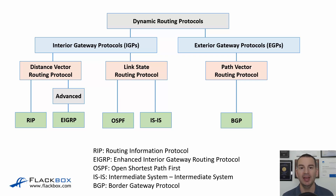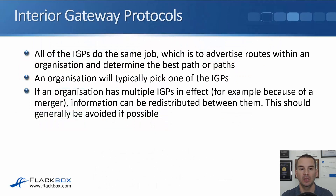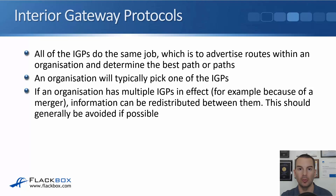So that's our different IGPs. As mentioned, our one and only EGP in use today is BGP, the Border Gateway Protocol. In the next several sections I'll be covering the IGPs in depth, and we'll get to BGP in a later section. With our IGPs, they all do the same job: advertising routes within an organization and determining the best path or paths to the different networks. An organization will typically pick one IGP — they all do the same job, so there isn't really any need to use more than one.